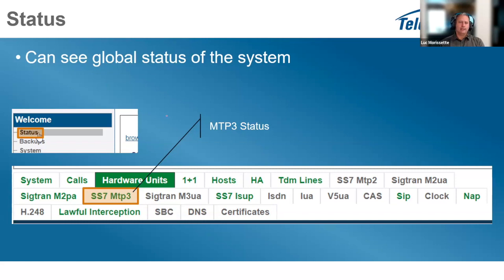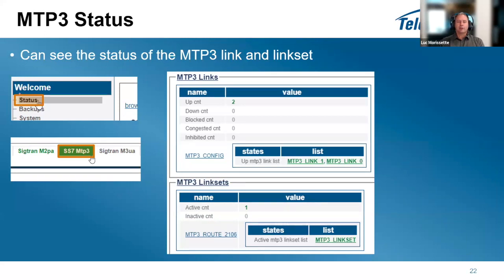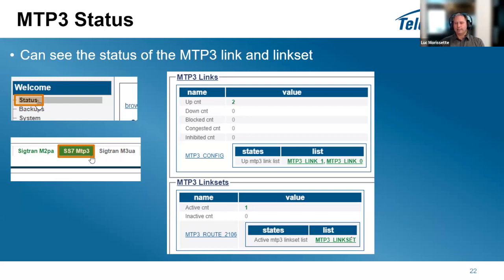Once configuration is done, go to the Status section which presents everything configured on the system and whether it is up or available. In MTP3 status you see all configured links with up or down indication - giving your links descriptive names makes it clear which link to a specific provider is down. You also see link sets and which routes use each link set.